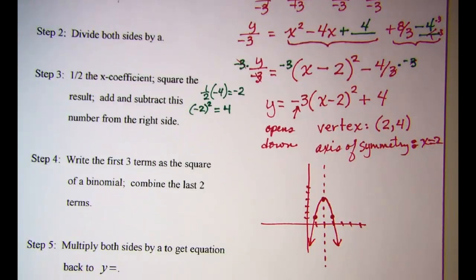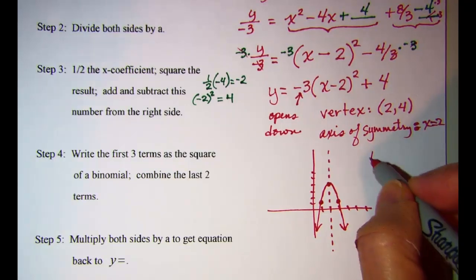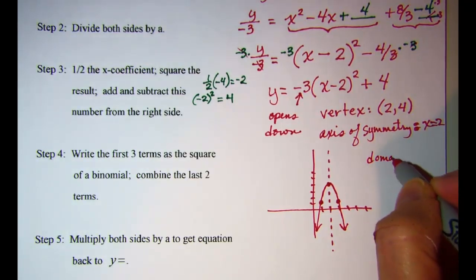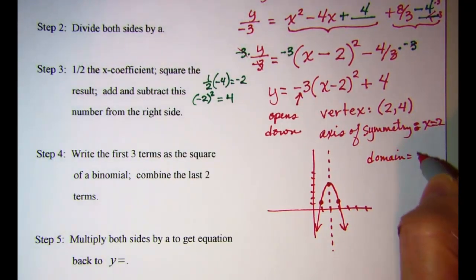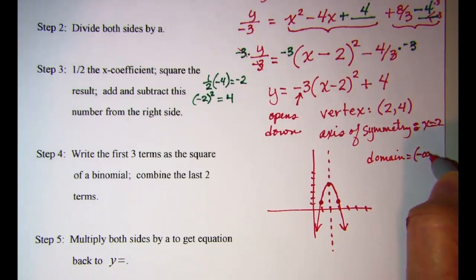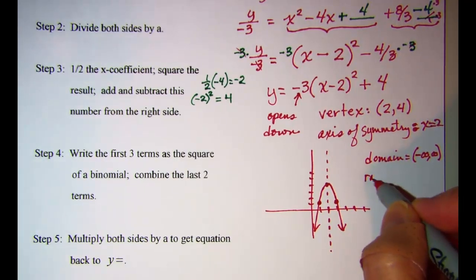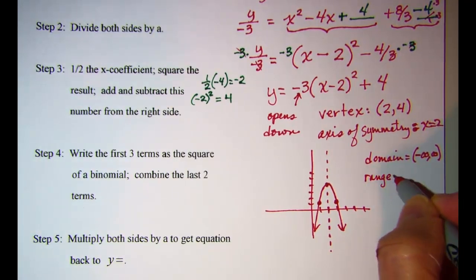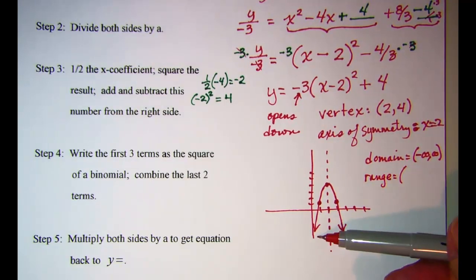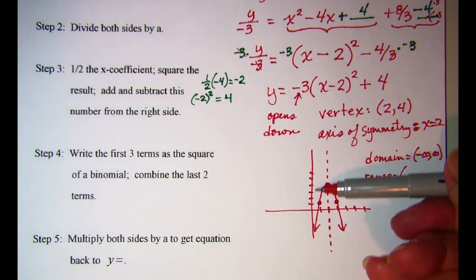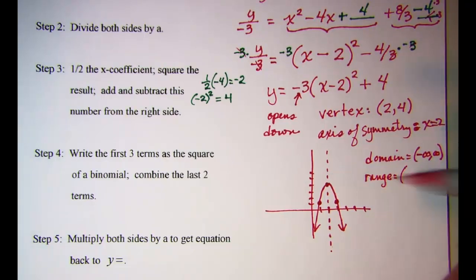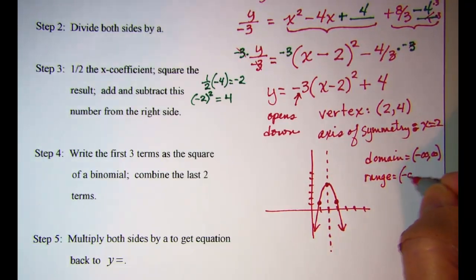I was asked for the domain and range. Domain is all real numbers. And the range... our smallest number is negative infinity, and we come up to 4. Negative infinity up to 4.